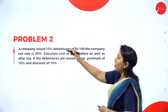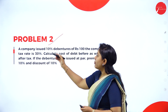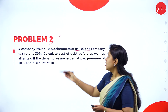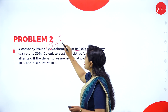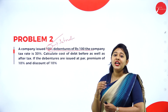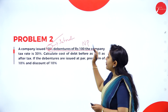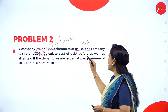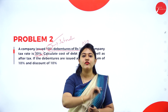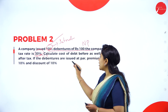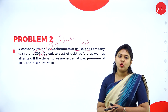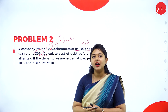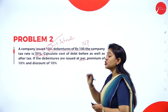Moving further, we have problem number 2, which is similar to the first problem. A company issued 10% debenture of rupees 100. So 10% is the interest and rupees 100 is the net proceeds. The company tax rate is 30%. Calculate the cost of debt before as well as after tax if the debentures are issued at par, premium of 10%, and discount of 10%. Let us do the first condition: issued at par.